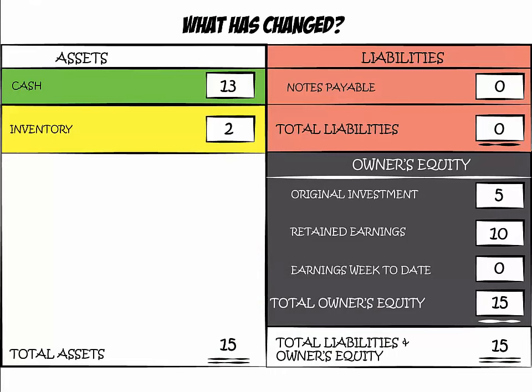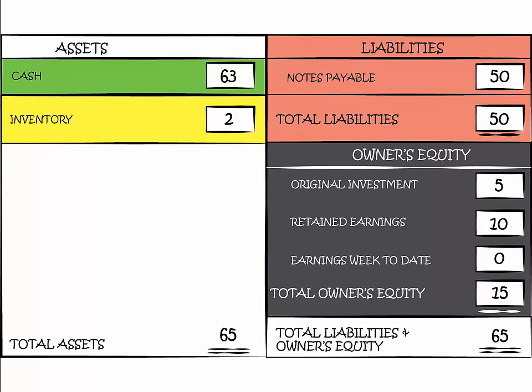How does this bank loan of $50 affect the balance sheet? You received $50 in cash, so your cash will go up from $13 to $63. Taking into account the remaining inventory of $2, this brings your total assets to $65. You also have to add the loan under liabilities, under notes payable. This brings your total liabilities to $50. Owner's equity remains at $15, bringing total liabilities plus owner's equity to $65. We are in balance.